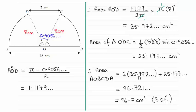So I just grouped these sections together to give us the final area. Two sectors plus the area of the triangle. And when rounded, as you can see, it comes to 96.7 centimeter squares, to three significant figures.